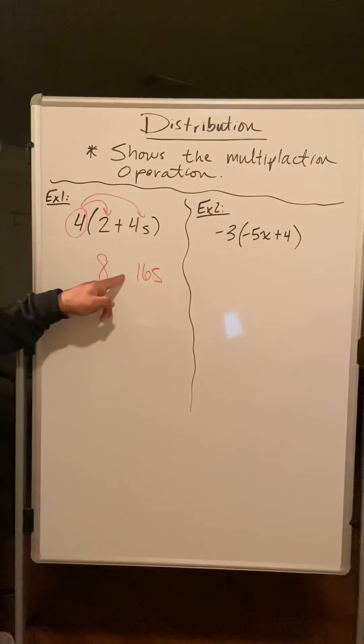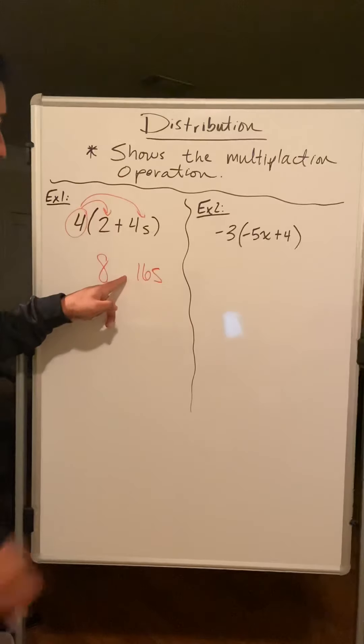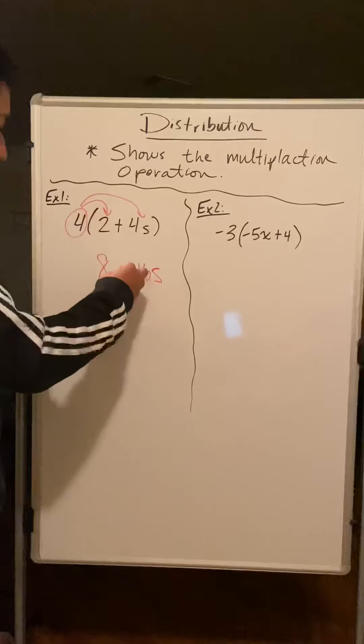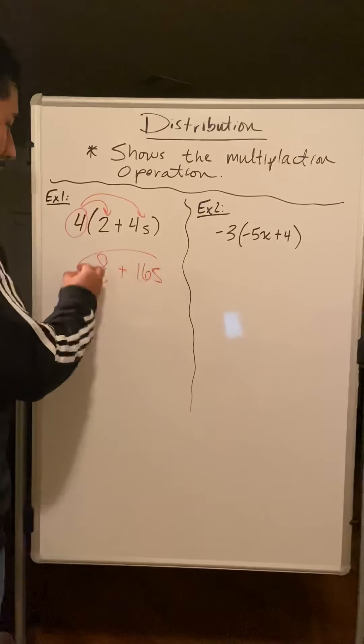What do I put right here? Do I put a plus or minus? Did I have any negatives anywhere? No I did not, so I know that this is a positive 16 and there's my answer.